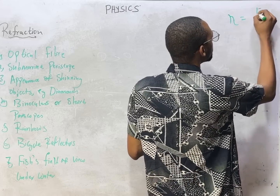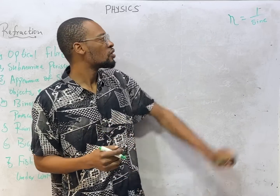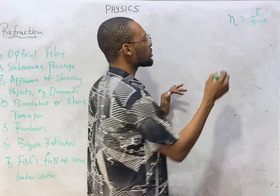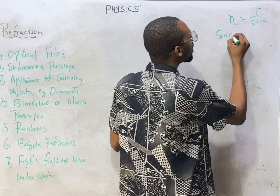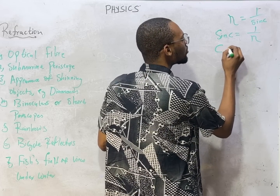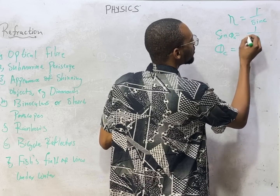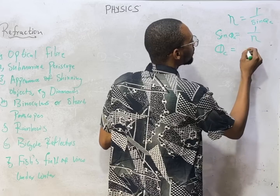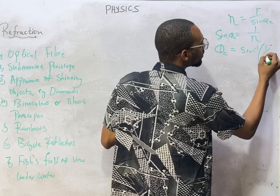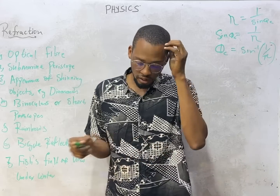This formula will be very helpful to you: refractive index equals 1 over sine C, where C is the critical angle. So refractive index is inversely proportional to sine of the critical angle. That means sine of the critical angle equals 1 over the refractive index, and the critical angle θc equals sine inverse of 1 over the refractive index.